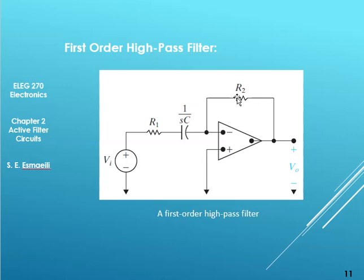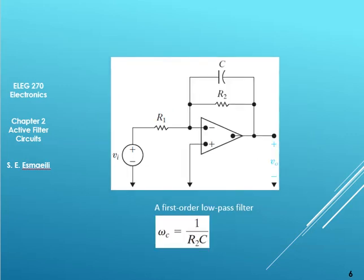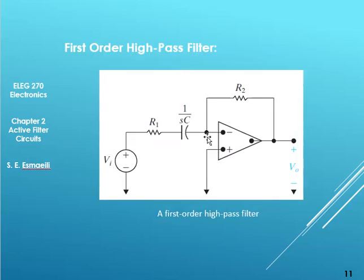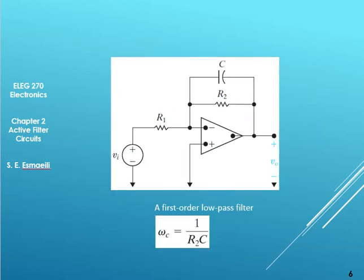So it's easy to remember: in high pass, series; in low pass, parallel. In high pass your capacitor is in the input, the capacitor and resistor is going to be on the feedback.